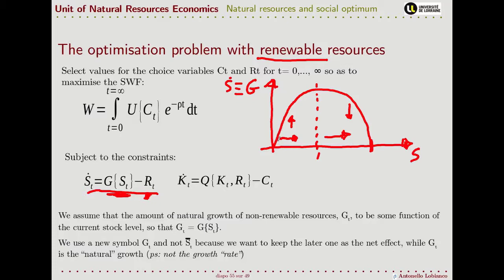When the resource stock is very small, the growth rate is very high, but this is because S — the level of the stock — is very small. When we consider the growth itself, with no harvesting, it is very limited, and increases to become maximum only when we reach a certain amount of stock.